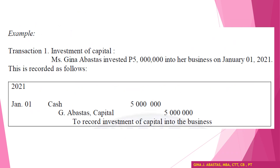For example, the transaction is an investment of capital: Ms. Gina Abastas invested 5 million pesos into her business on January 1, 2021. This is recorded as follows — write the date, January 1, then debit cash, and with indentation credit G. Abastas Capital. The explanation could be 'to record investment of capital into the business.' The amount for debit and the amount for credit must always be equal, following the rules on debits and credits.